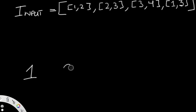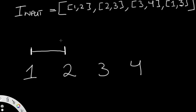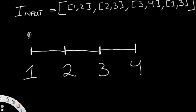So we have the interval [1,2], starting at 1 and ending at 2. The second one is [2,3], starting at 2 and going to 3. The third is [3,4], going from 3 to 4. And the fourth is [1,3], going from 1 all the way to 3. We do have overlapping in the area from 1 to 3.